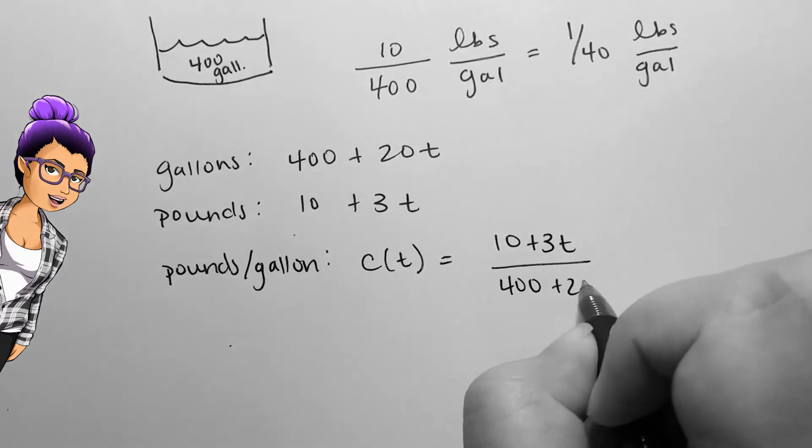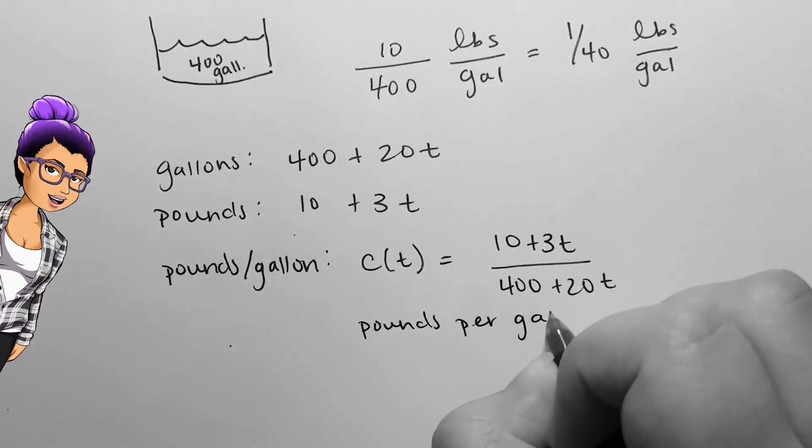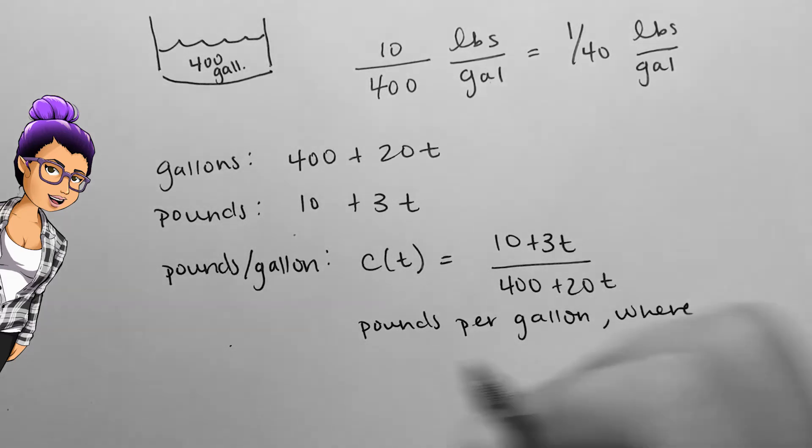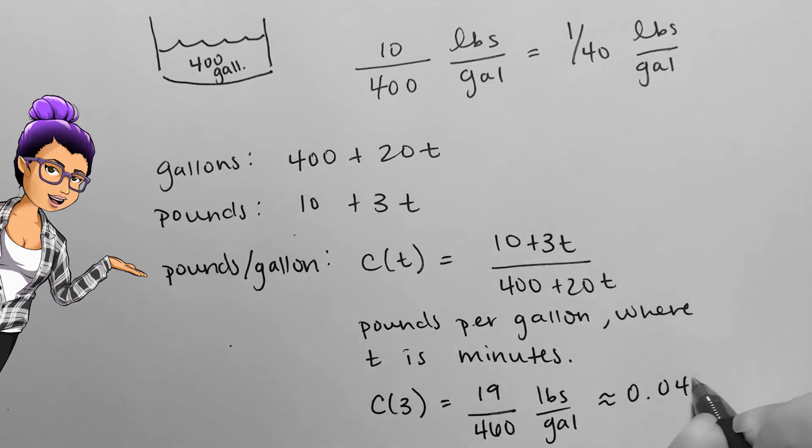A function of concentration in pounds per gallon of sugar in the tank after T minutes is C(T) equals (10 plus 3T) over (400 plus 20T). If we wanted to know the concentration at some time, say 3 minutes, we could use 3 as the input and round to about 3 decimal places so the concentration is 0.041 pounds per gallon.